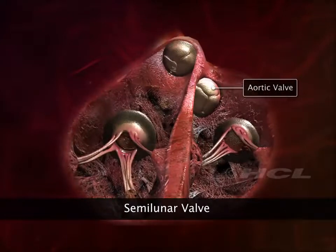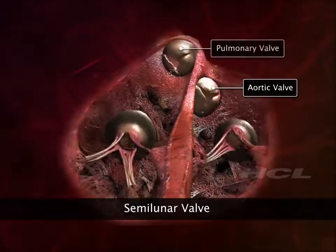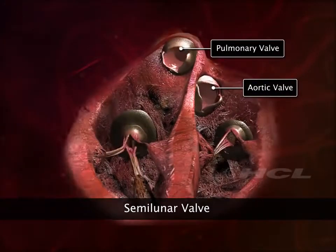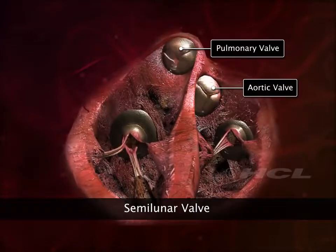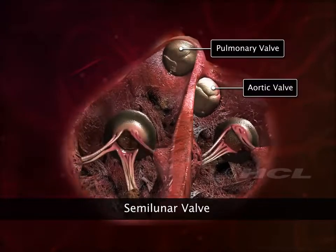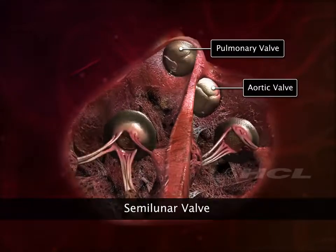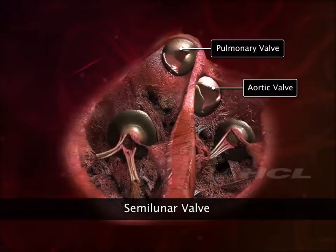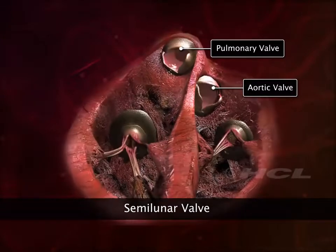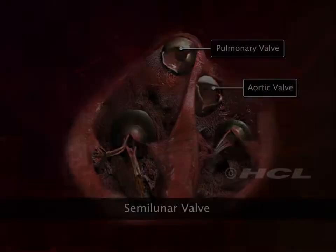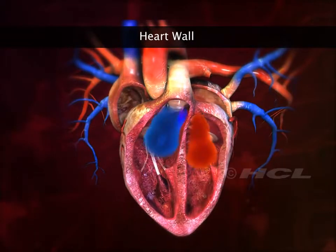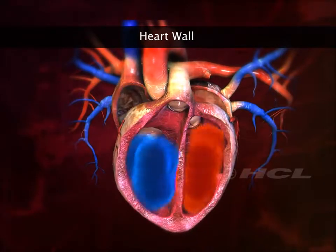Because of their crescent moon shape, these two valves are also called semilunar valves. The characteristic double-up sound of the heartbeat is produced during the closing of the heart valves.